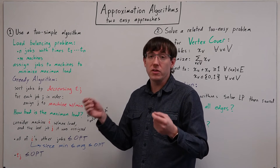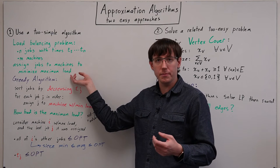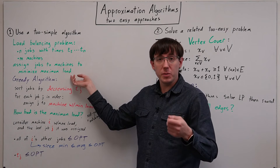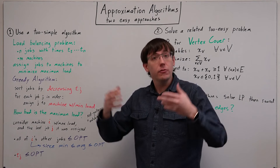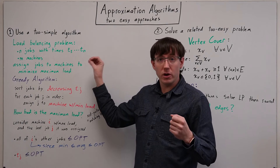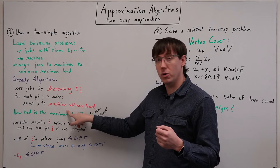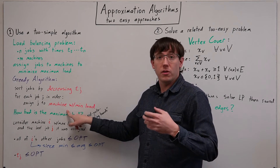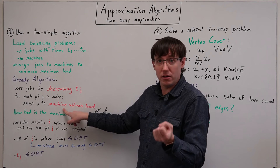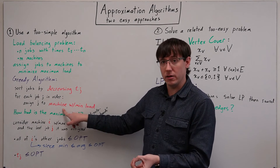Because the optimal solution will have some worst-case machine, and that machine's load must be at least the average load under the optimal solution, and the average load under the optimal solution must be at least the average load for the partial solution, because here we have not yet assigned all of the jobs.